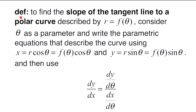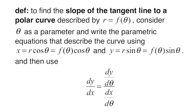Finally, to find the slope of the tangent line to a polar curve r = f(θ), treat θ as a parameter and write parametric equations x = r·cosθ and y = r·sinθ. Substitute the expression for r so both x and y are functions of θ. Then the slope is dy/dx = (dy/dθ) / (dx/dθ).